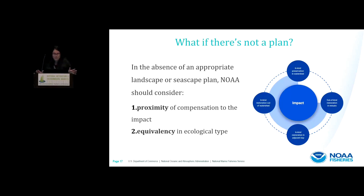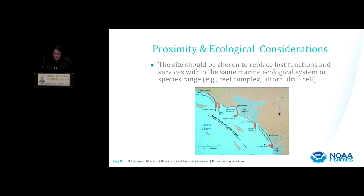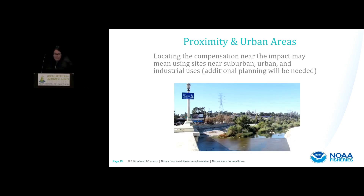So what if there's no landscape or seascape plan? In this case, NOAA will be evaluating mitigation options by considering both the proximity of the compensation and the impact to the site, and equivalency and ecological type. With respect to proximity, there are ecological considerations that need to be taken into account for estuarine and marine species. In some cases, the marine boundary, such as the extent of the lateral drift cell, is going to be more appropriate than watershed when considering the compensatory mitigation options. Many impacts to coastal areas occur in urban settings. In addition to providing ecological services, aquatic resources in urban areas also provide sociological services, so fully offsetting the loss of habitats in urban areas may require doing restoration and other actions in urban areas, which will have its own unique set of challenges.